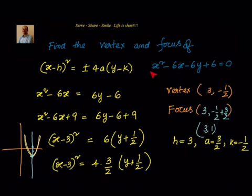We have seen that we have x², that means it is of the form (x-h)² = ±4a(y-k). Now we have tried to convert the given equation into the form of (x-h)² = 4a(y-k).